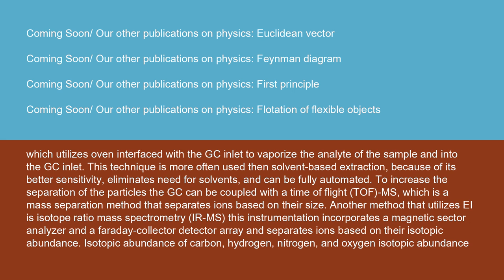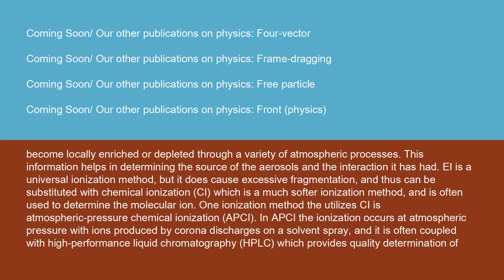To increase the separation of the particles, the GC can be coupled with time-of-flight (TOF) MS, which is a mass separation method that separates ions based on their size. Another method that utilizes EI is isotope ratio mass spectrometry (IRMS). This instrumentation incorporates a magnetic sector analyzer and a Faraday collector detector array and separates ions based on their isotopic abundance. Isotopic abundance of carbon, hydrogen, nitrogen, and oxygen become locally enriched or depleted through a variety of atmospheric processes. This information helps in determining the source of the aerosols and the interactions they have had.